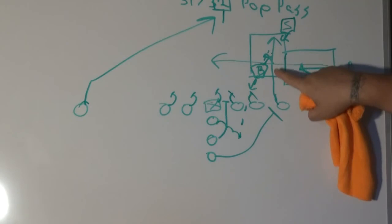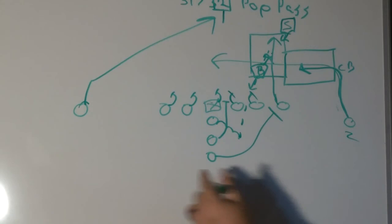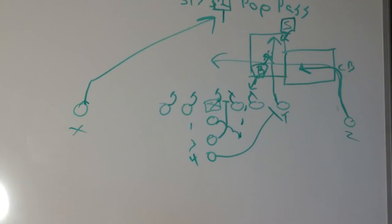If the linebacker and the safety both converge on the split end, then after he clears, after these three guys clear here, the under is going to be this split end right here, which is going to be the Z. Z, X, Y, one, three, four.